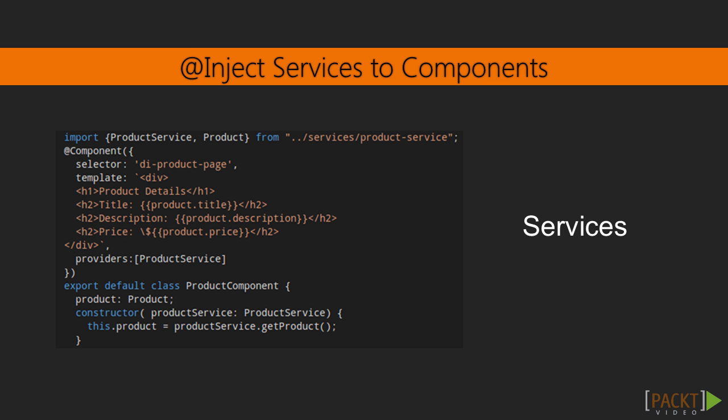One of the key features of AngularJS is dependency injection. Components need to use services to perform tasks, and these services are injected into the component via the injector. This is known as dependency injection. The injector provides the instance of the service so that it can be used in the component. Here we are injecting a service in the constructor of the class and adding it in the provider tag of our component.